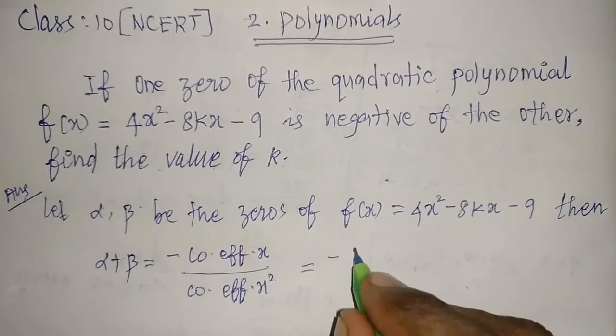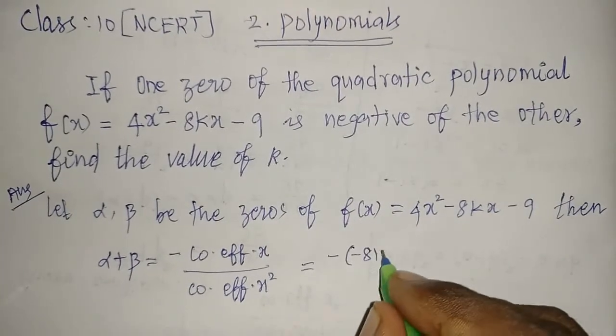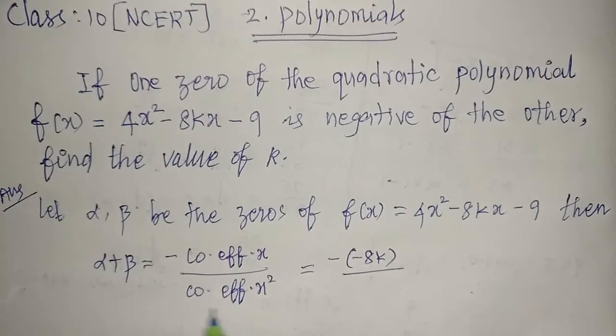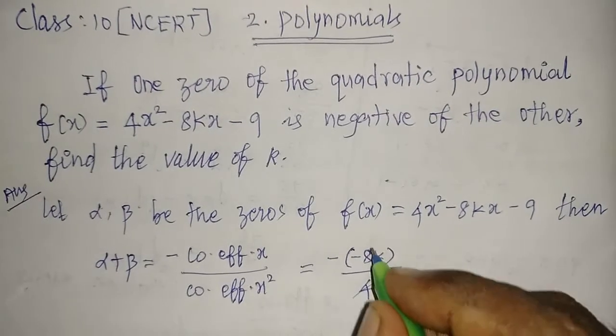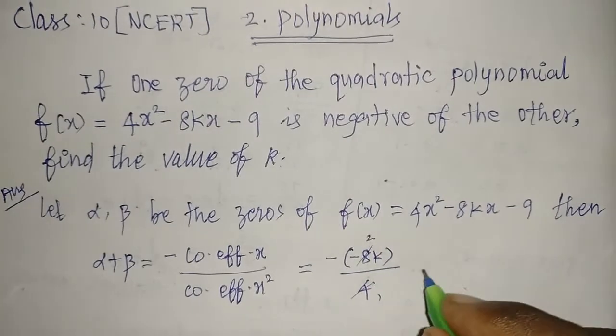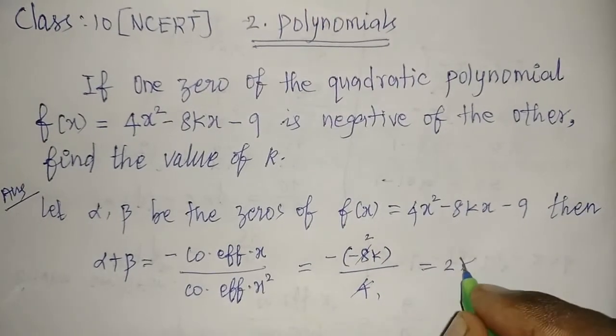Which is equal to minus coefficient of x value, we have minus of 8k, divided by coefficient of x square value, we have 4. If we cancel this, minus into minus is plus, so we get 2k.